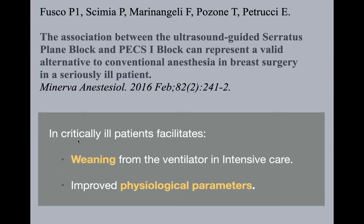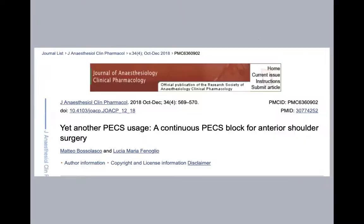Other groups did exactly the same. In critically ill patients, the PECS block was used for weaning patients from the ventilator, with notable improvements in physiological parameters. It was also combined and used as an alternative to SPBs in seriously ill patients. When a new technique starts, people don't believe much in it — they leave it as a final option, the last chance. And when they saw it was working, that's how people started to believe. It was then followed by use in anterior shoulder surgery, given the involvement of the lateral pectoral nerve and shoulder.